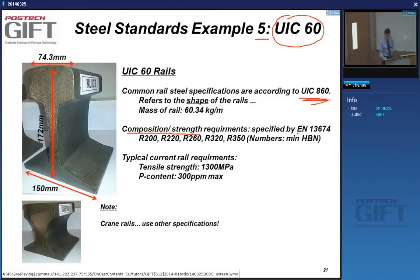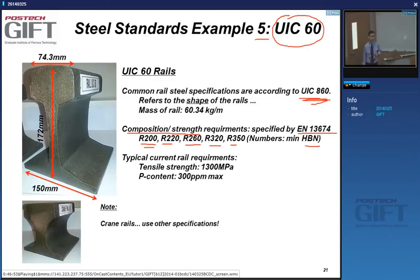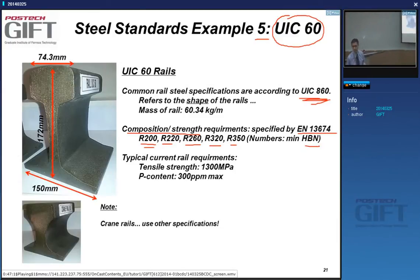There are composition and strength requirements for rail steels, covered in Europe by EN 13674. Rail grades start with R for rail. The number refers to hardness on the Brinell scale. If you ever wondered who uses the Brinell scale — railroad people do. Hardness is the most important property because rolling on rails creates a lot of frictional damage, so you need high hardness.